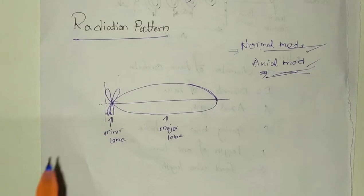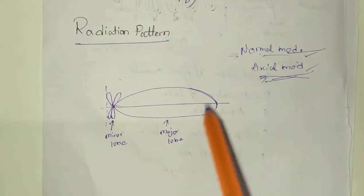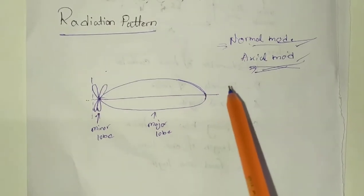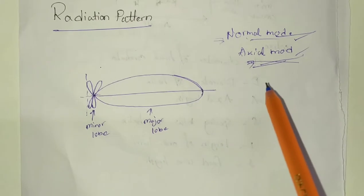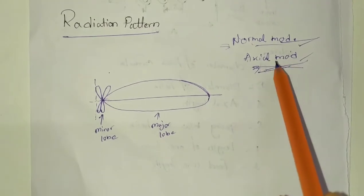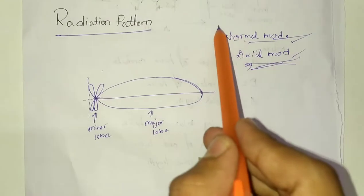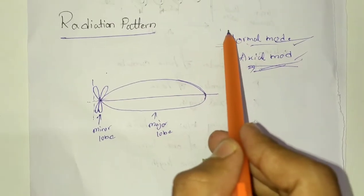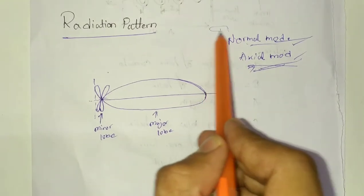Let us move on to the radiation pattern. In helical antenna, there are two modes of operation: normal mode operation and axial mode operation. In normal mode operation, the radiation pattern is bidirectional.